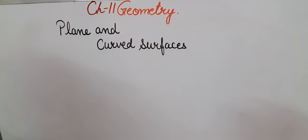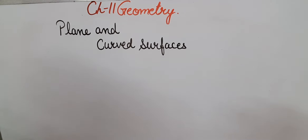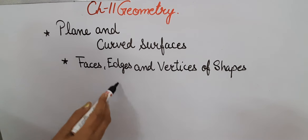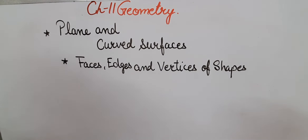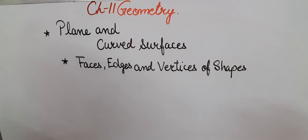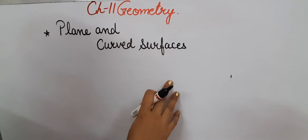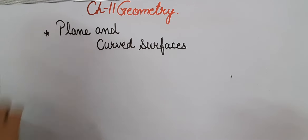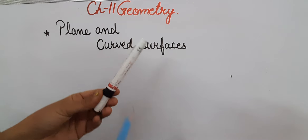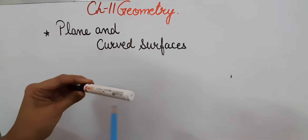Hello everyone, let's continue our chapter 11 geometry. In this video we are going to learn about plane and curved surfaces, and faces, edges and vertices of various shapes. Let us start with plane and curved surfaces. If we see the surface of this whiteboard, it is flat, so this comes under the plane surface. If we talk about the surface of this marker from this side, it is turning around, so this is a circular surface.